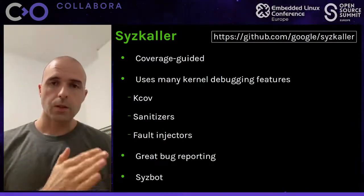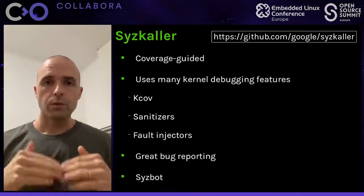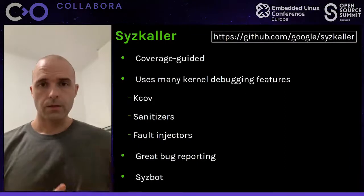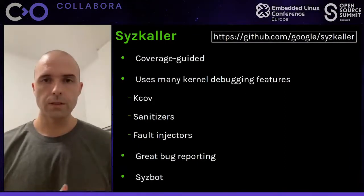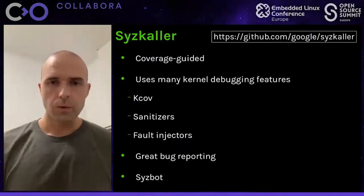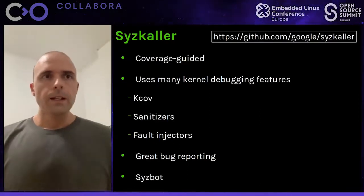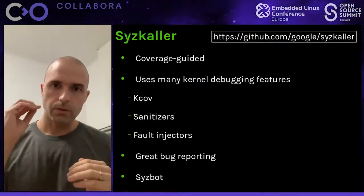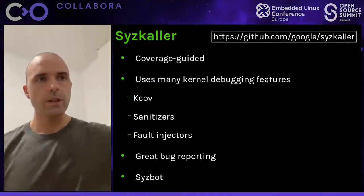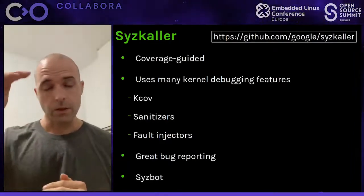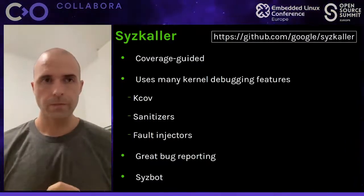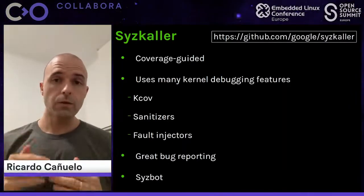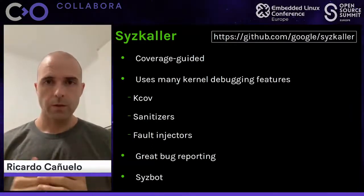In order to improve the fuzzing process, Syzkaller uses a few kernel debugging features. The most important one is KCOV. KCOV is something you can enable when compiling the kernel, and it is key to Syzkaller. When enabled, it makes the compiler introduce instrumentation code all over the kernel code, so that the kernel can keep track of code coverage and share this information with userspace. Then Syzkaller retrieves this information and checks the code coverage when it runs one of its test programs to see how effective it was.